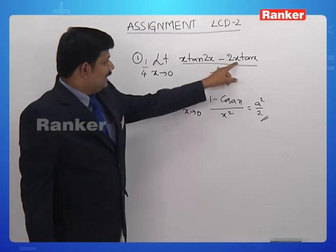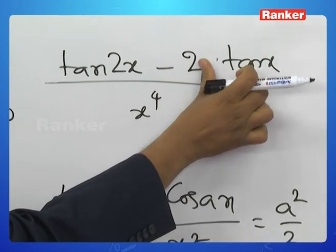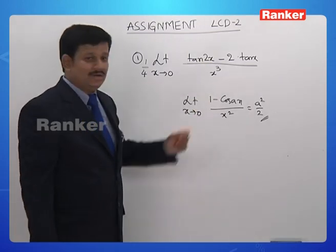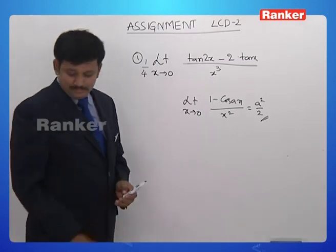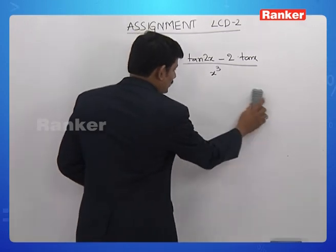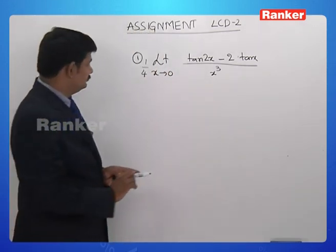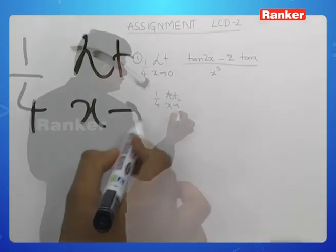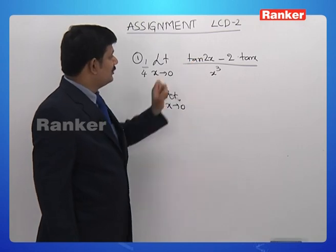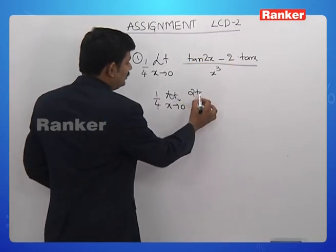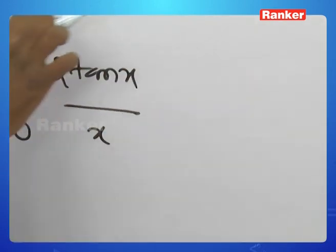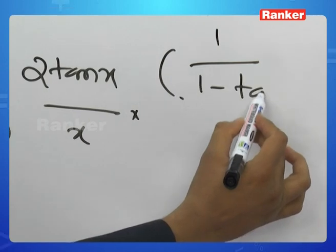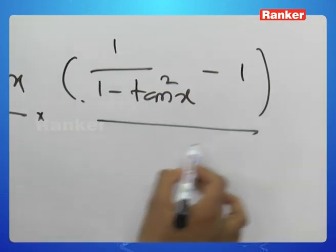Now, one x common in the numerator gets cancelled with one x in the denominator, leaving us with tan2x minus 2tanx divided by x cube. We know tan2x equals 2tanx divided by 1 minus tan²x. Taking 2tanx common from the numerator, and borrowing one x from the denominator, we are left with 1 divided by 1 minus tan²x, minus 1, divided by x square.